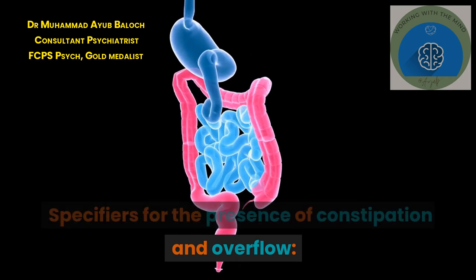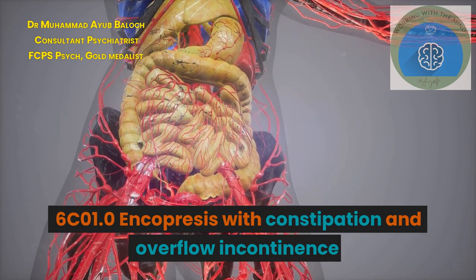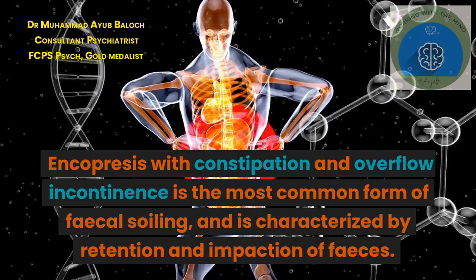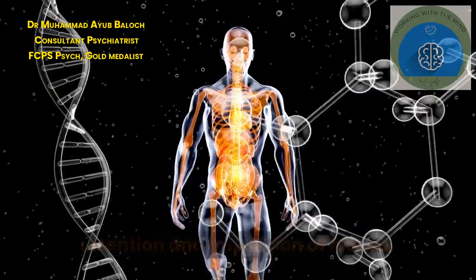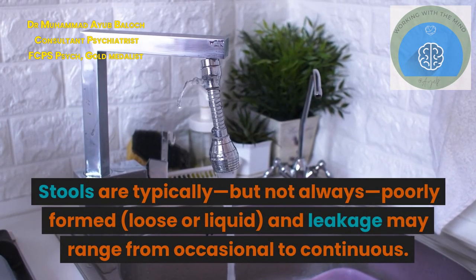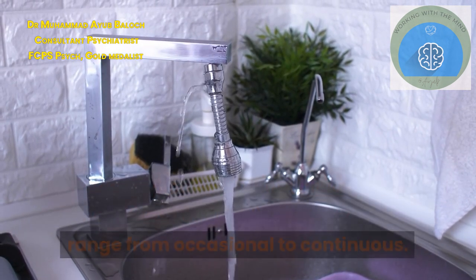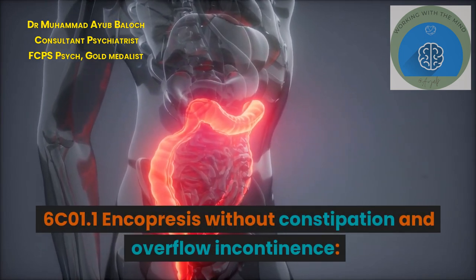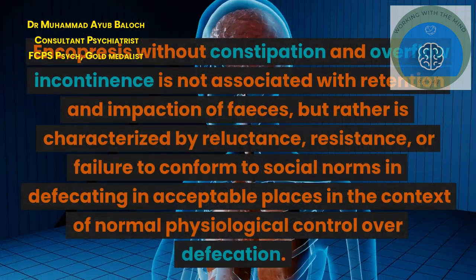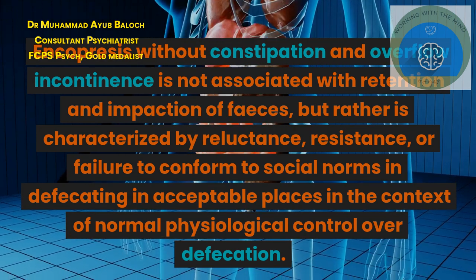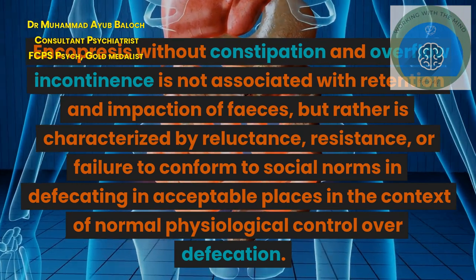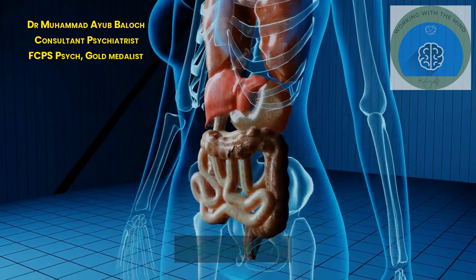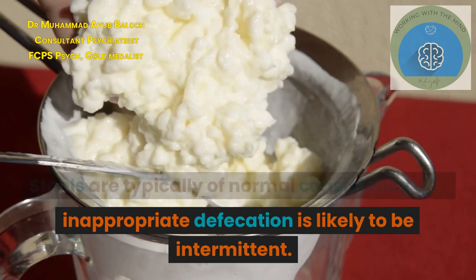Specifiers for the presence of constipation and overflow: 6-C01.0 encopresis with constipation and overflow incontinence is the most common form of fecal soiling and is characterized by retention and impaction of feces. Stools are typically, but not always, poorly formed, loose or liquid, and leakage may range from occasional to continuous; there is often a history of toilet avoidance leading to constipation. 6-C01.1 encopresis without constipation and overflow incontinence is not associated with retention and impaction of feces, but rather is characterized by reluctance, resistance, or failure to conform to social norms in defecating in acceptable places in the context of normal physiological control. Stools are typically of normal consistency and inappropriate defecation is likely to be intermittent.